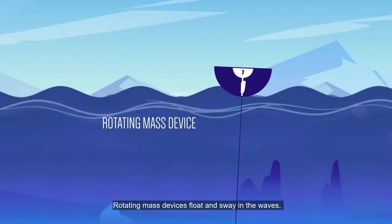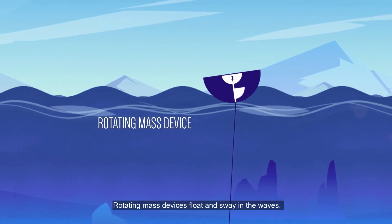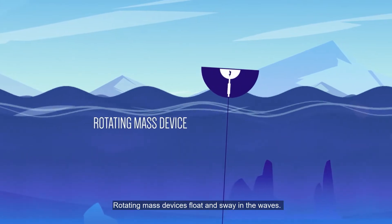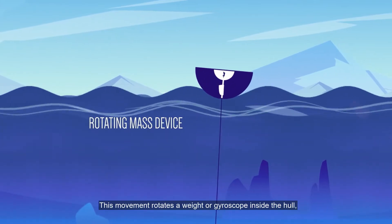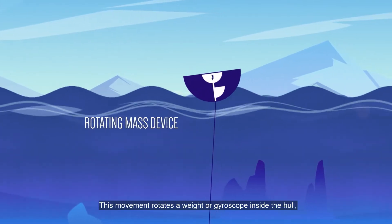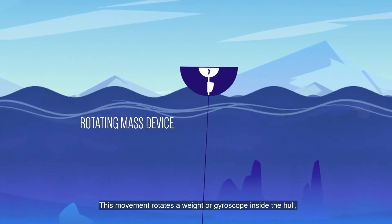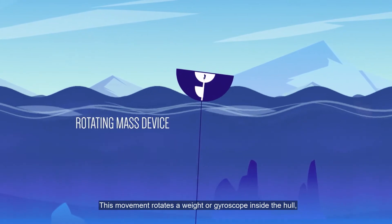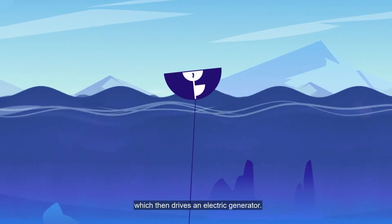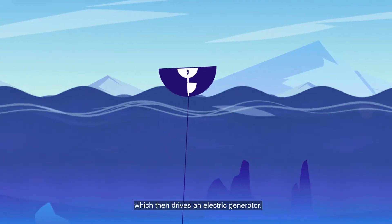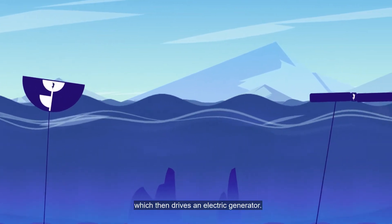Rotating mass devices float and sway in the waves. This movement rotates a weight or gyroscope inside the hull, which then drives an electric generator.